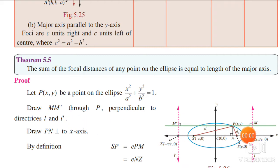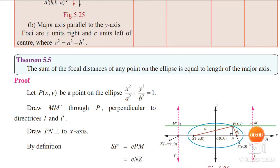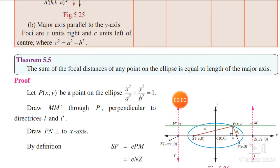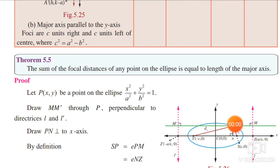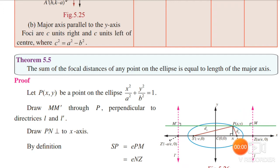The line MM' passes through point P and is perpendicular to both directrices L (the left-hand pink dotted line) and L' (the right-hand pink dotted line). Also draw PN perpendicular to the x-axis, where N is the foot of the perpendicular.